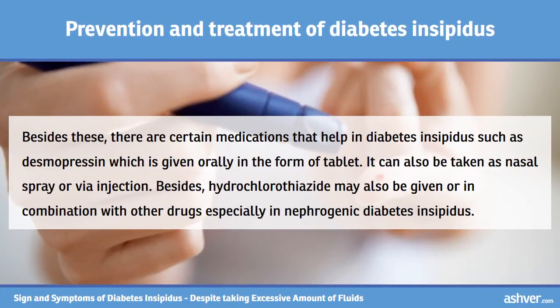There are certain medications that help in diabetes insipidus, such as desmopressin, which is given orally in the form of a tablet. It can also be taken as a nasal spray or via injection. Besides, hydrochlorothiazide may also be given, or in combination with other drugs, especially in nephrogenic diabetes insipidus.